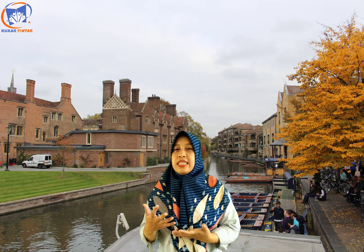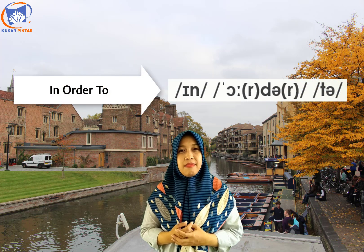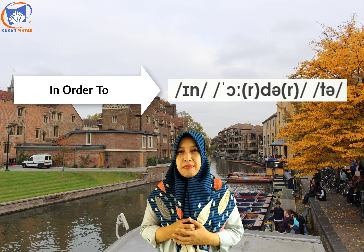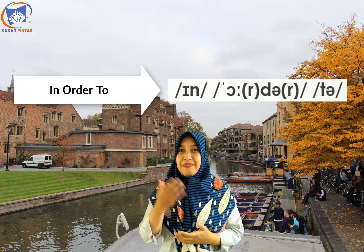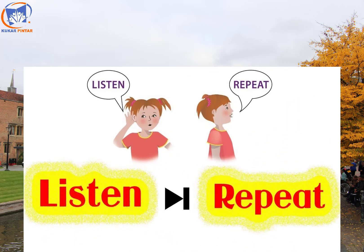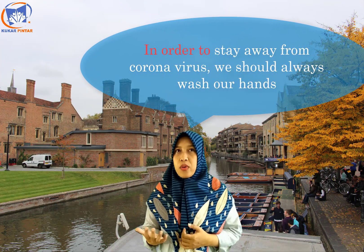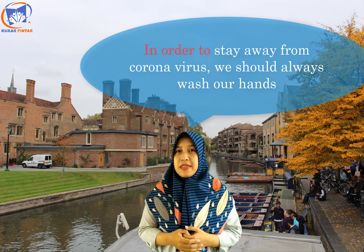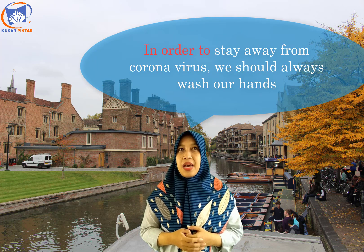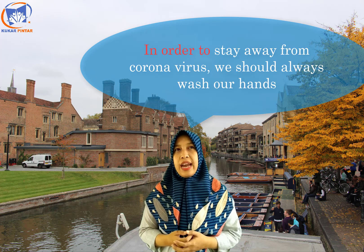Let's practice how to pronounce the words and sentences. Everyone, listen and repeat: 'In order to.' Now your turn. Well done. Now listen and repeat the full sentence: 'In order to stay away from coronavirus, we should always wash our hands.' One more time: 'In order to stay away from coronavirus, we should always wash our hands.'